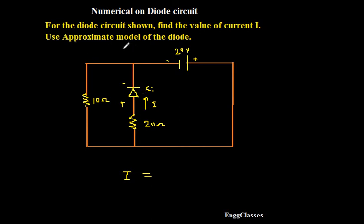But as they have said use approximate model of the diode, in the sense I need to replace diode with its cut-in voltage of 0.7 volt. Is that correct? So this is how I need to replace diode with its cut-in voltage of 0.7 volt.